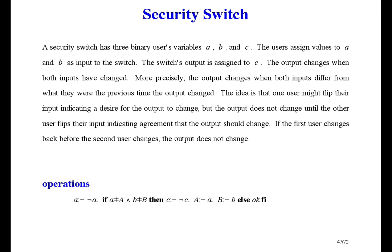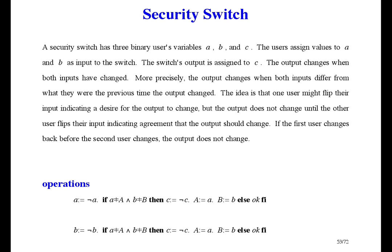Big A records the state of input little a the last time the output changed; big B records the state of input B the last time the output changed. We need them in order to tell if an input has changed. Here's the operation that person A performs: if person A wants the output to change, person A changes input A. Or maybe person A already flipped input A but that didn't flip the switch and now person A is taking it back. Either way, the only thing person A can do is flip input A. Then, if both inputs differ from what they were the last time the output changed, output C flips, and big A and big B record the current values of the inputs. If not, nothing happens. There's a similar operation for person B. That's a reasonable formalization of the problem and it's already an implementation of the operations.